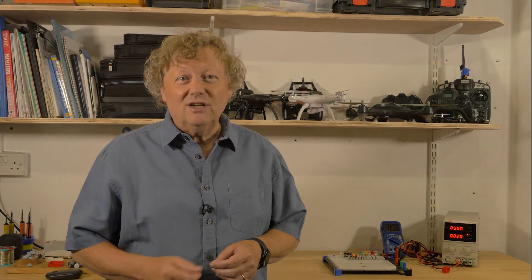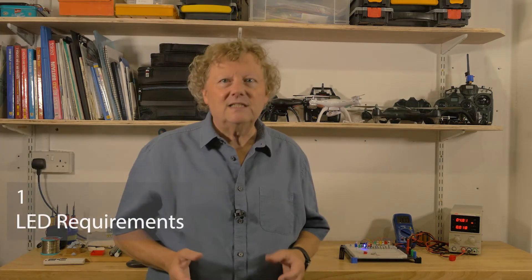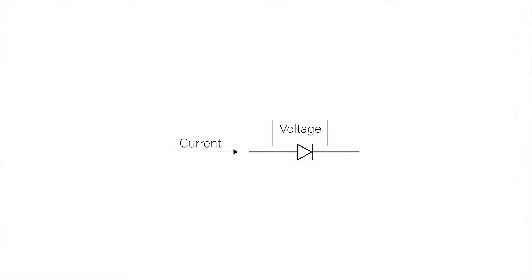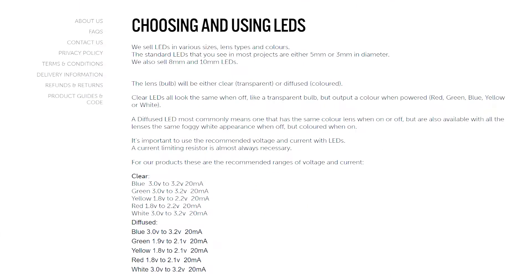To get started let's look at what LEDs need to power them up. Most LEDs used in electronics have similar requirements — they all need a voltage measured across them and a current that goes through them. When you buy and use LEDs, always look to see if the seller has offered some guidance or specifications on voltage and current.